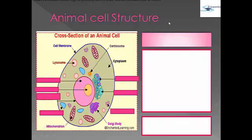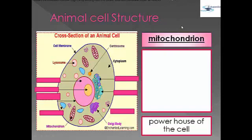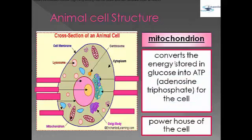Next is the mitochondrion, also called the powerhouse of the cell. It converts the energy stored in glucose into ATP, or adenosine triphosphate, for the cell.